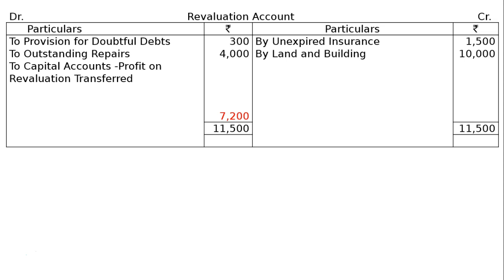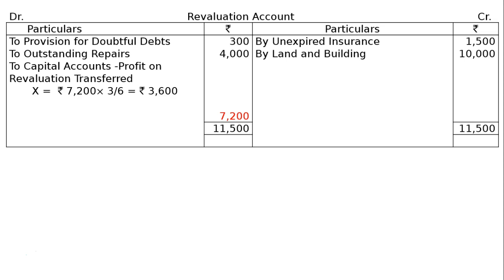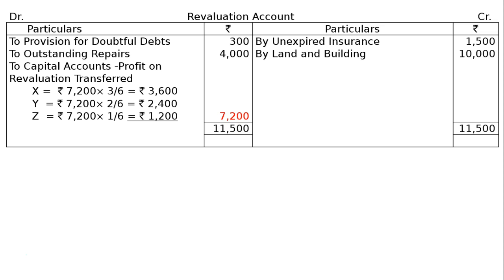The revaluation profit of 7,200 is distributed among X, Y and Z in ratio 3:2:1. X gets 7,200 × 3/6 = 3,600; Y gets 2,400; Z gets 1,200. Now prepare the capital accounts.